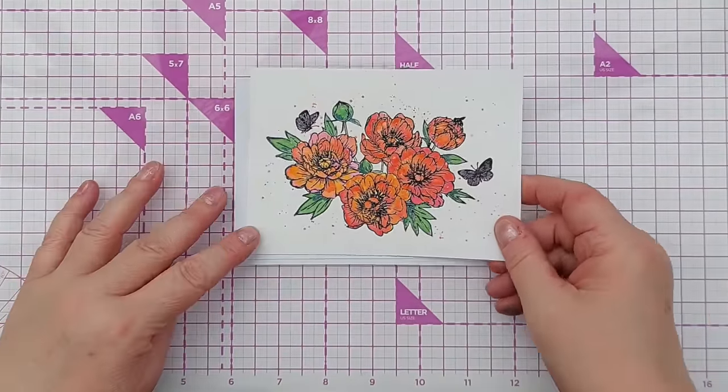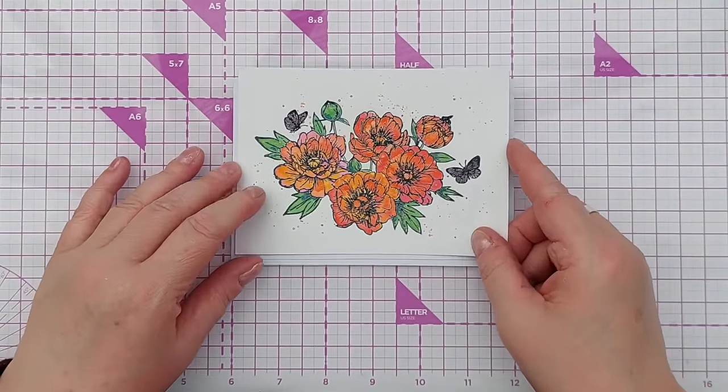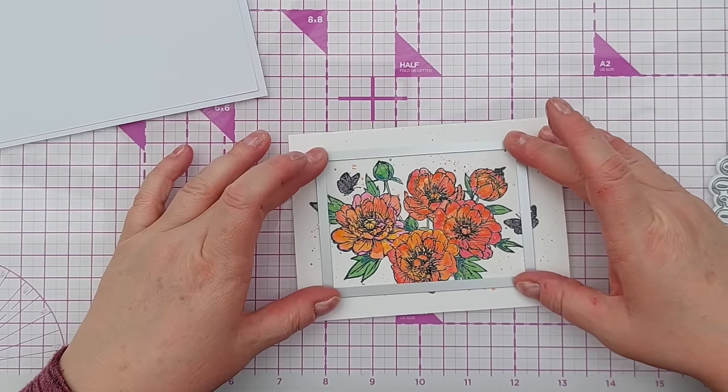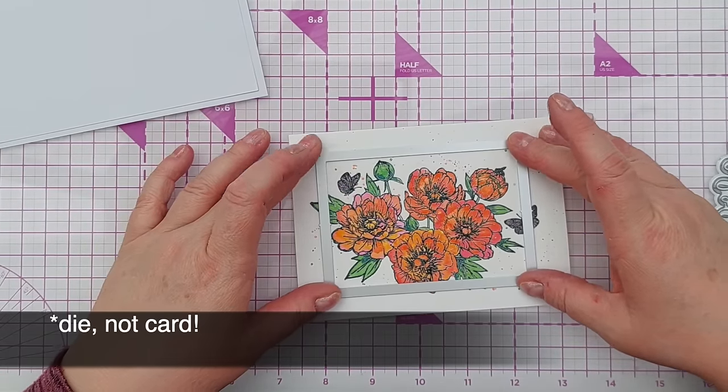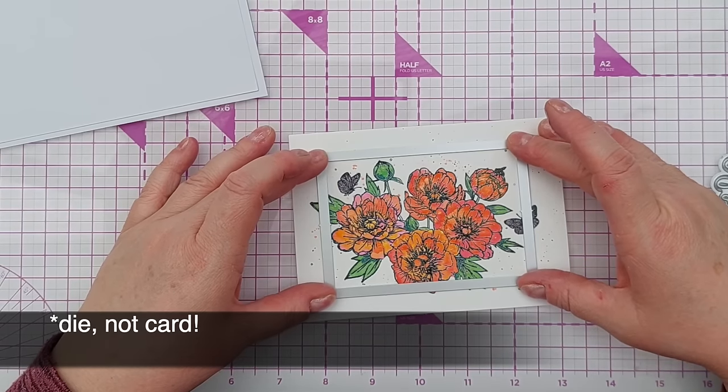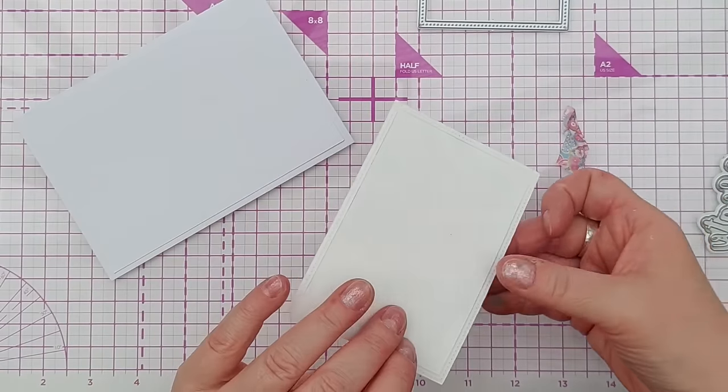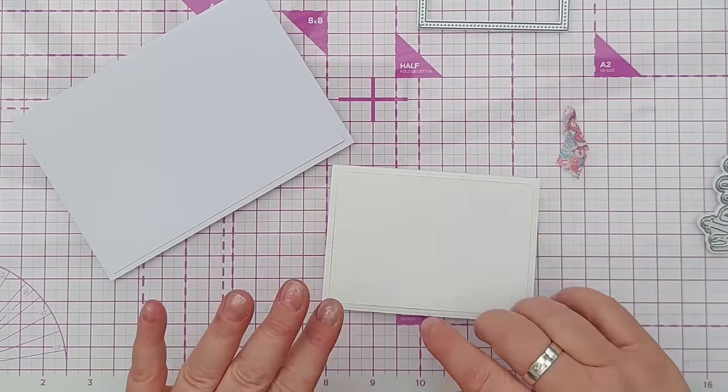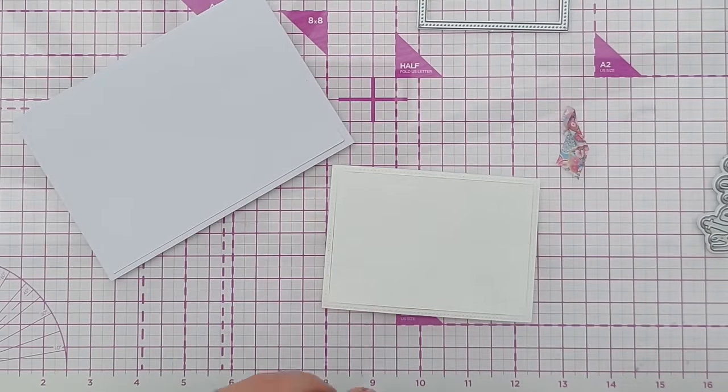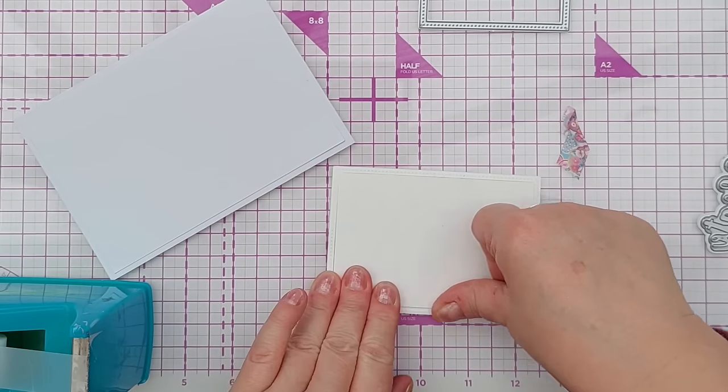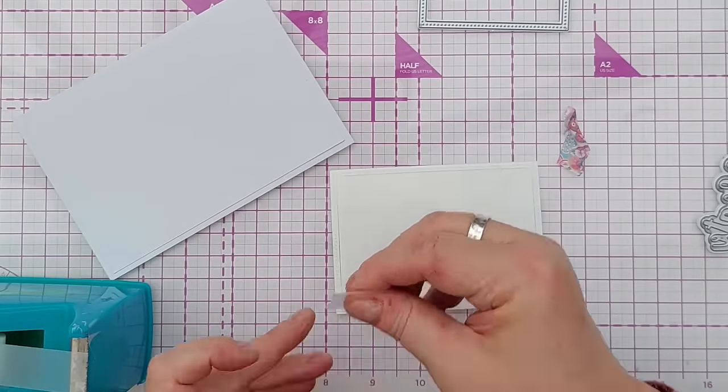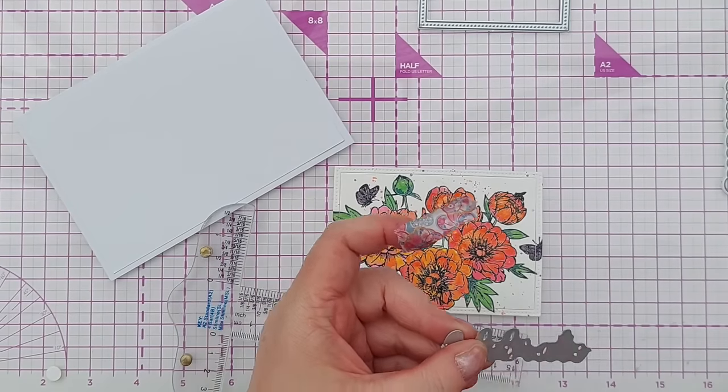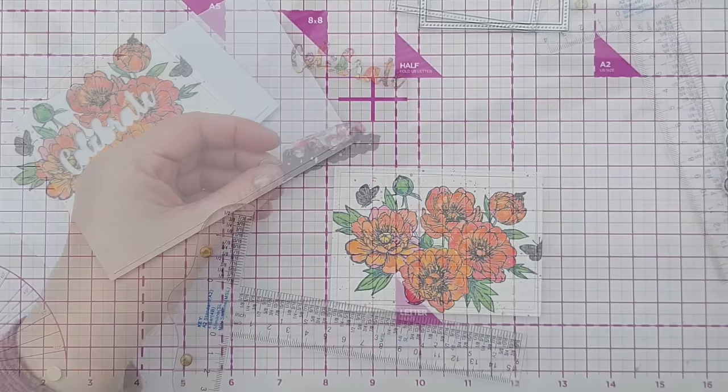So to make a card then, I think the obvious card to do would be this one because it's pretty much done for me. So what I'm going to do is use this frame die to cut a frame, and the inside. Now the frame is actually supposed to be separate from the main part there, but actually I want it to stay together, so I'm going to pop some tape on the back of that.